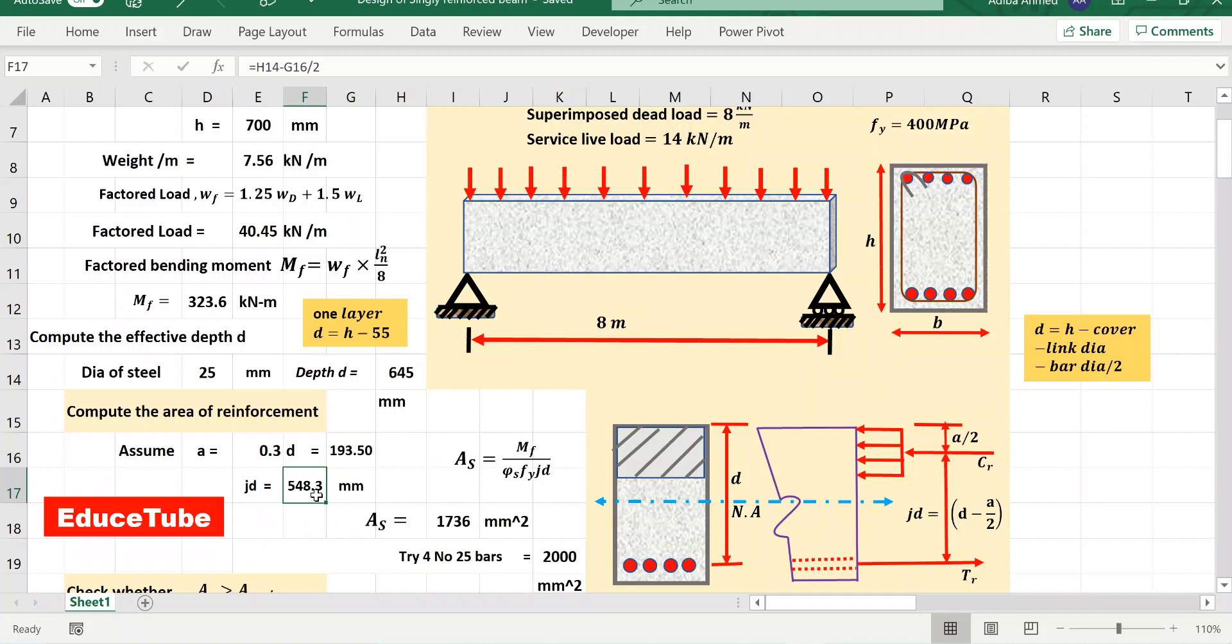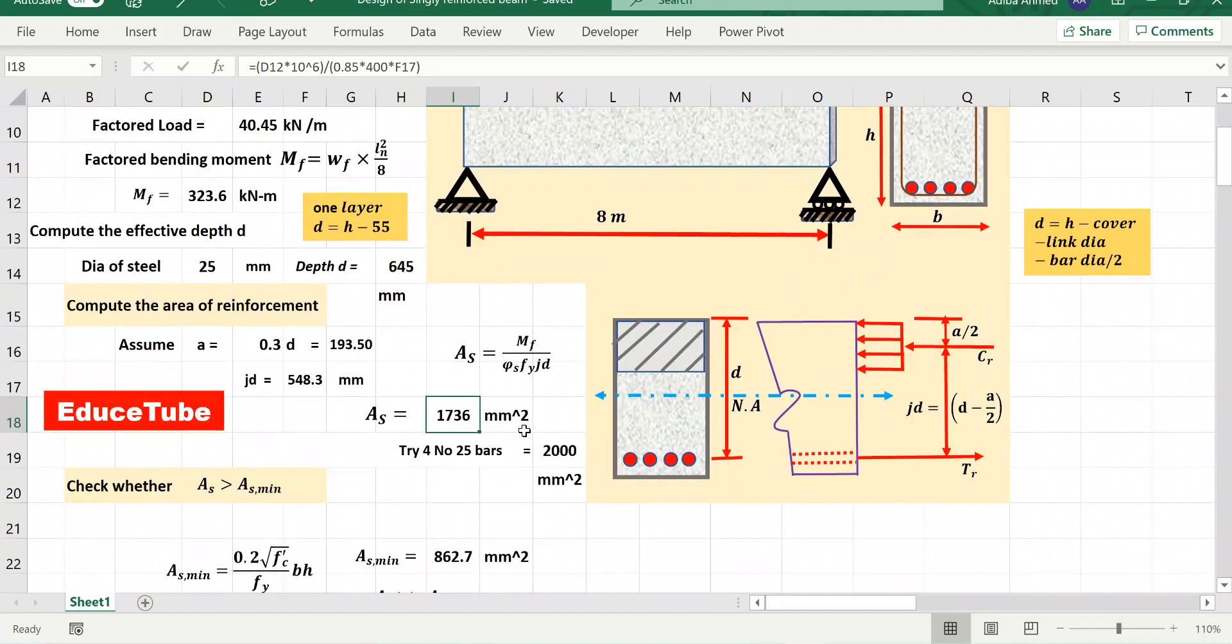So using all this value you can see that I used all this cell address and I calculated it as 1736 millimeter square.